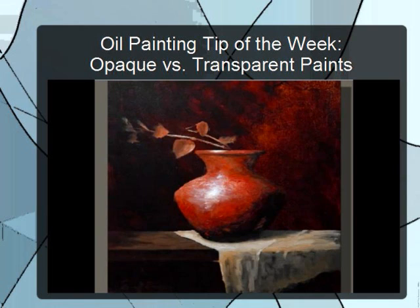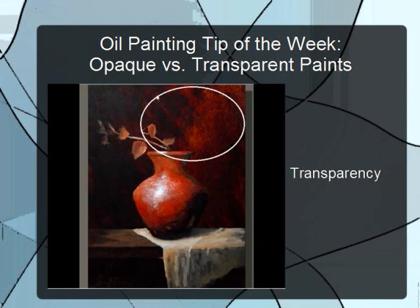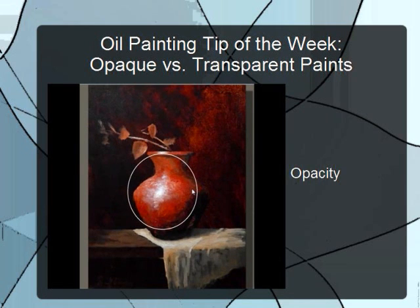A lot of times people understand the idea behind transparent and opaque colors but don't understand the practical application in terms of painting. The key characteristic is this: transparent color has a tendency to recede, and opaque color has a tendency to advance. That's pretty much it from a painting perspective — that's all you really need to know.